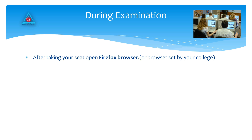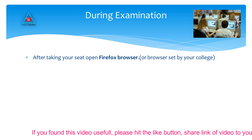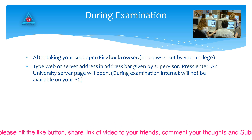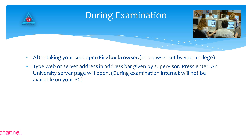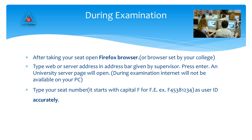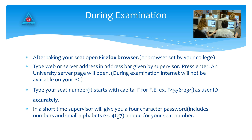During the examination, after taking your seat, open the Firefox browser or the browser set by your college. Type the web or server address in the address bar as given by the supervisor. Press Enter and the university server page will open. Type your seat number — it starts with capital F for FE, for example F45381234 — as your user ID accurately. In a short time, the supervisor will give you a 4-character password which includes numbers and small alphabets, for example 4TG7, which will be unique to your seat number.